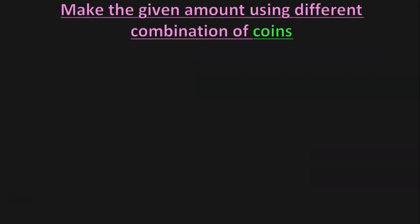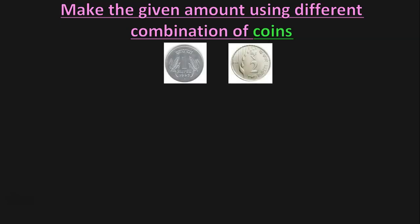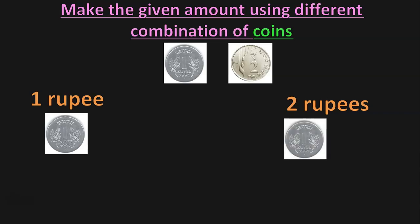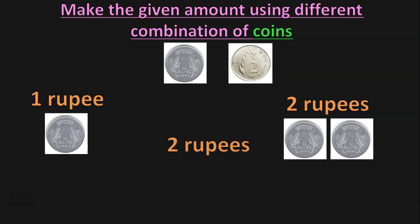The next activity is making the given amount using different combinations of coins. For example, with a 1-Rupee coin and a 2-Rupee coin: if asked for 1-Rupee, you give the 1-Rupee coin. If asked for 2-Rupees, you could give two 1-Rupee coins, or directly give the 2-Rupee coin. It is important for children to understand how things are bought using different combinations of coins and notes.